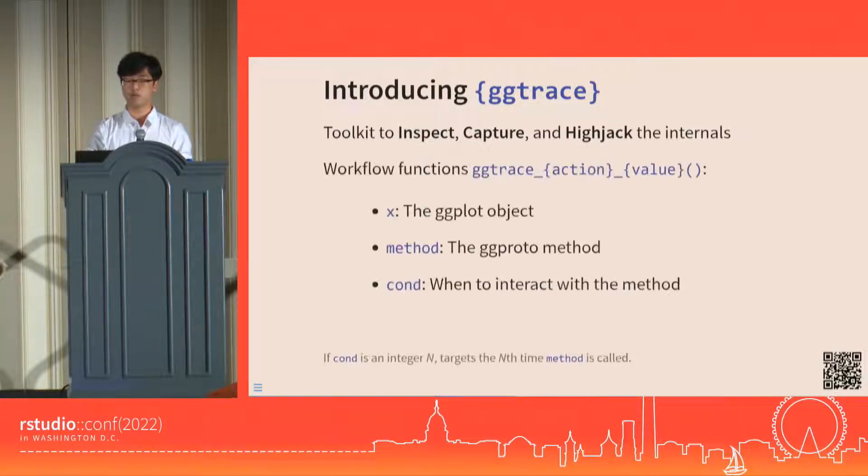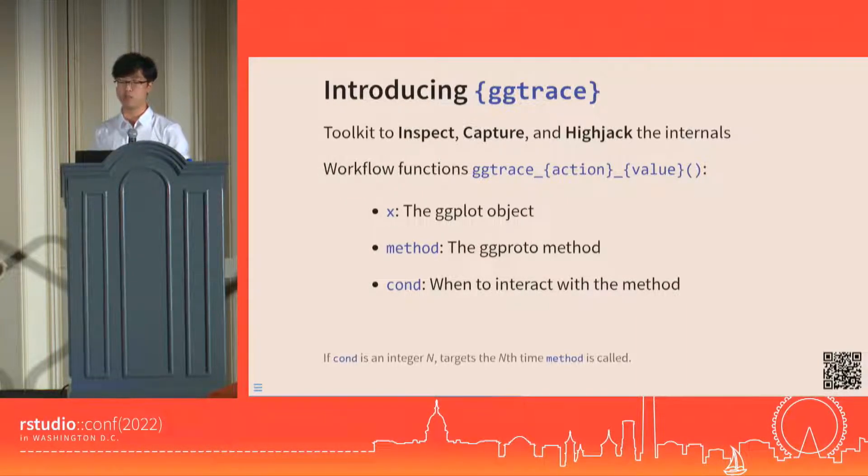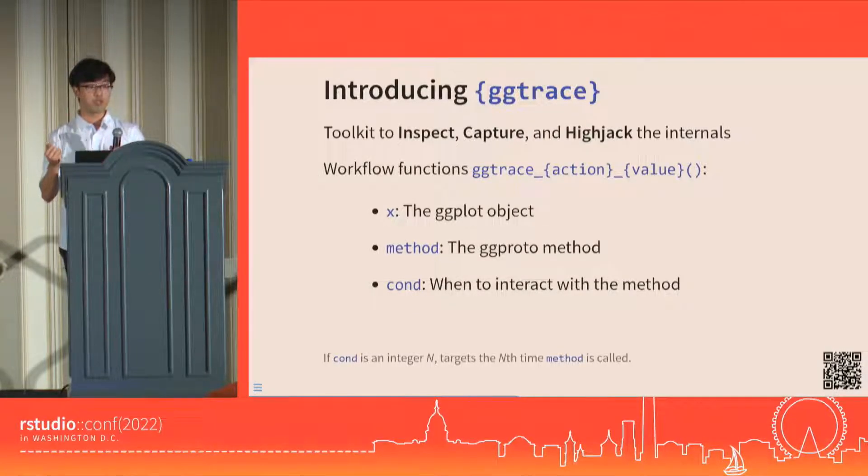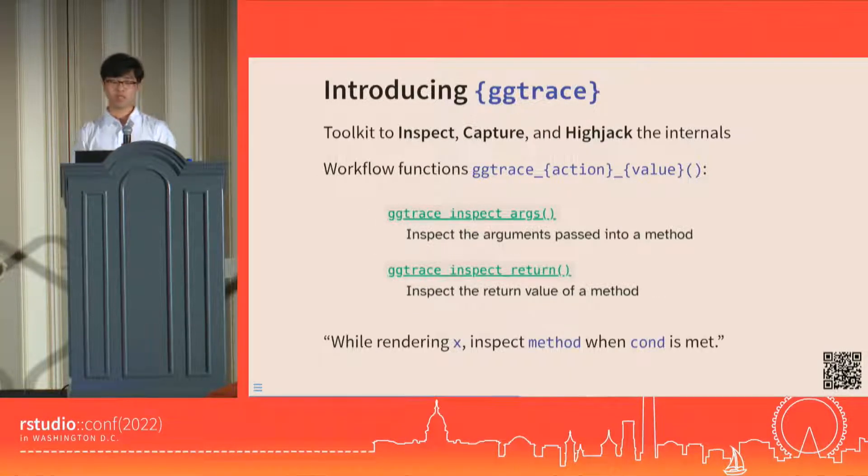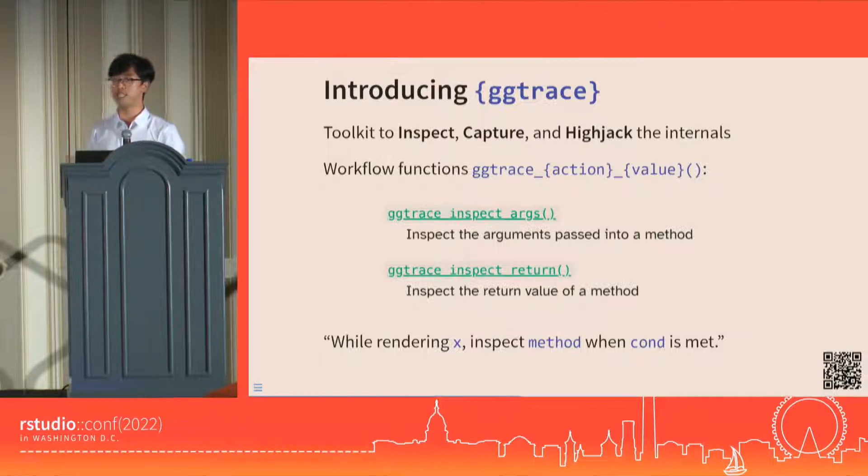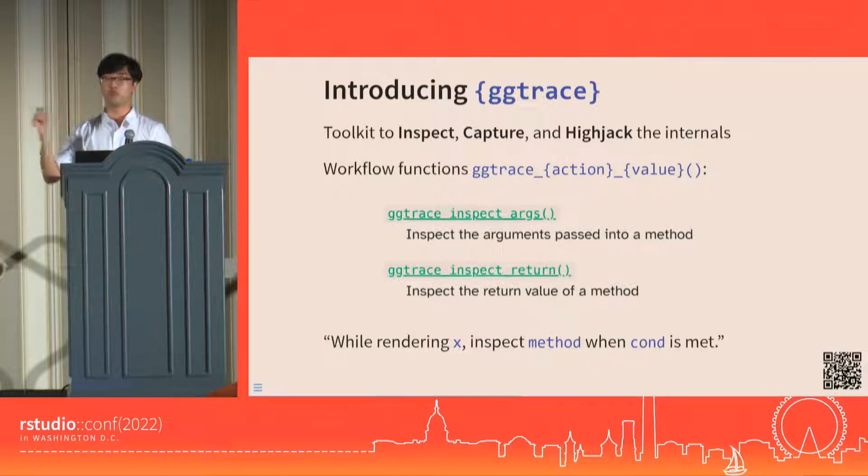ggtrace comes with a family of workflow functions in the form of ggtrace_action_value, which all take three arguments: the ggplot object, the ggproto method, and when to interact with that method. This talk will showcase just two functions from the inspect workflow, ggtrace_inspect_args and ggtrace_inspect_return, which lets us take a snapshot of a layer's data as it goes in and out of ggproto methods.